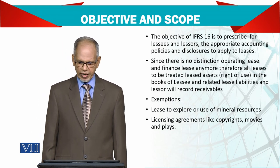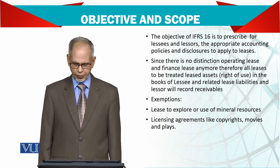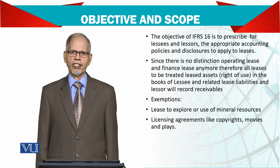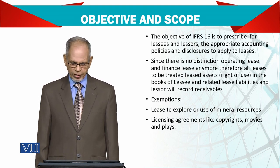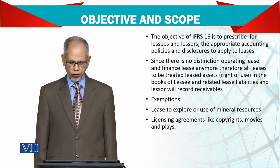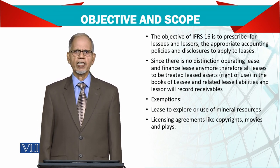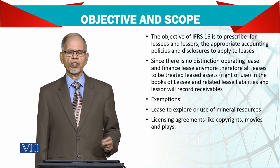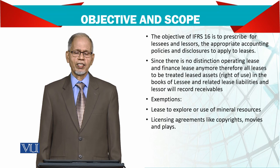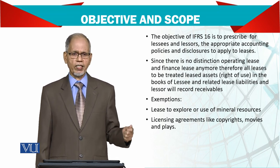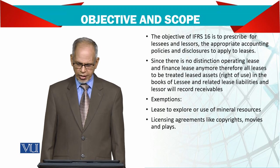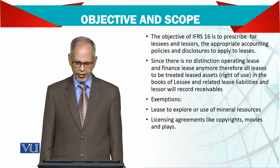The objective of IFRS 16 is to prescribe for the lessee and the lessor the appropriate accounting policies and disclosures applied to leases. Since there is no distinction between operating lease and finance lease, all leases are to be treated as leased assets. The terminology has also changed — it is no longer called 'asset under financial lease'; it is now called a right-of-use asset. In the books of the lessee, the related lease liabilities are recorded, and the lessor will record a receivable.